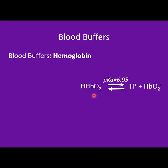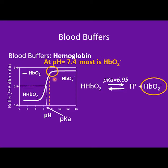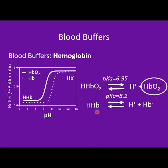When oxygen is bound to hemoglobin, the pKa of the reaction is 6.95. At physiological pH of 7.4, which is higher than this pKa, the majority of oxyhemoglobin will be in the base form. An interesting property of oxyhemoglobin is that oxygen is released more easily when it is in the acidic form. When oxygen is not bound to hemoglobin, the pKa of the reaction is higher, at 8.2, which is higher than physiological pH — meaning the majority of deoxyhemoglobin will be in the acidic form.